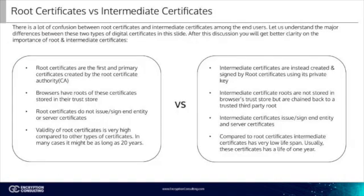Now that we have clarity on both, let's jump to the comparison and differences. Root certificates are the first and primary certificates created by the root certificate authority, whereas intermediate certificates are created by root certificates using their private key. Web browsers and other applications store root certificates in their trust store, which is highly critical as these apps and browsers go back to these trust stores for validating certificate authenticity. However, intermediate certificate roots are not stored in browsers' trust stores but are chained back to a trusted third-party root.